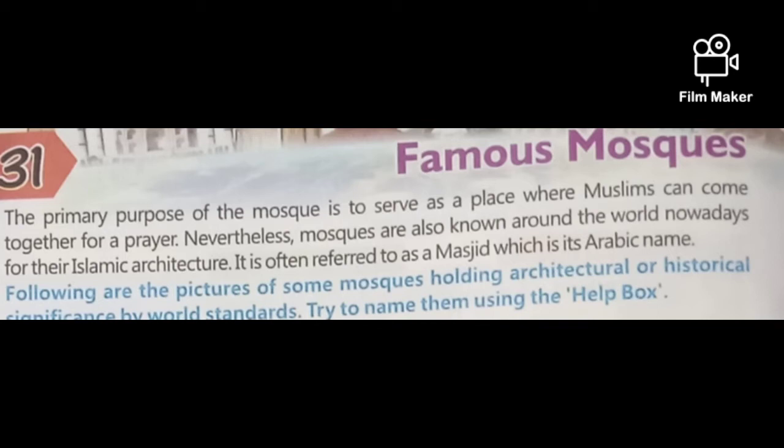Because their architecture varies from city to city, place to place, country to country — we find different types of mosques. It is often referred to as a Masjid, which is its Arabic name. Masjid means a pure place where Muslims can gather together and pray for their God. So I am going to explain a few buildings, a few mosques which are famous in the world.